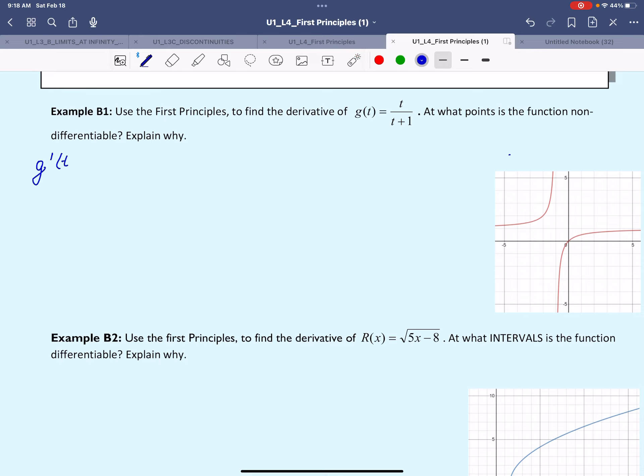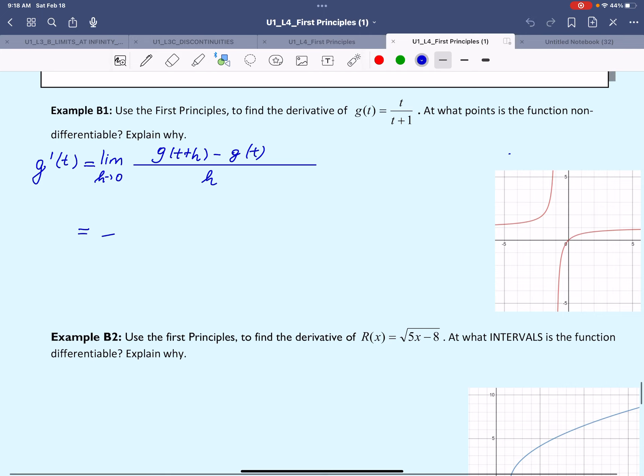The derivative, based on the first principles formula, that's the only way we know how to find the derivative of a rational function, will be the limit as h approaches 0 of g(t+h) minus g(t) divided by h.